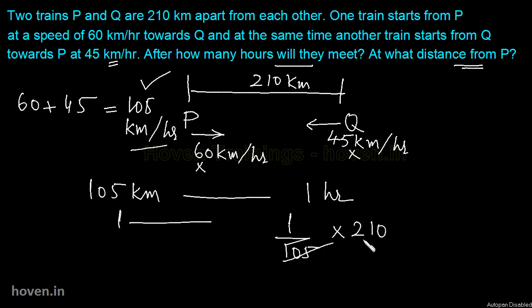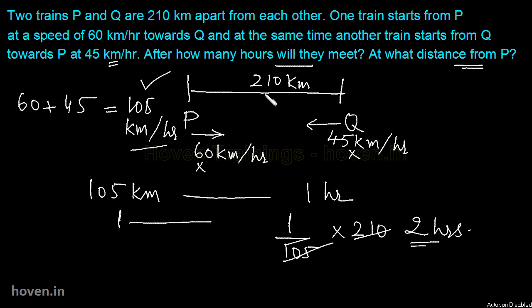So, time = distance divided by speed = 210 divided by 105, which comes out to be 2 hours. So they will meet after 2 hours.